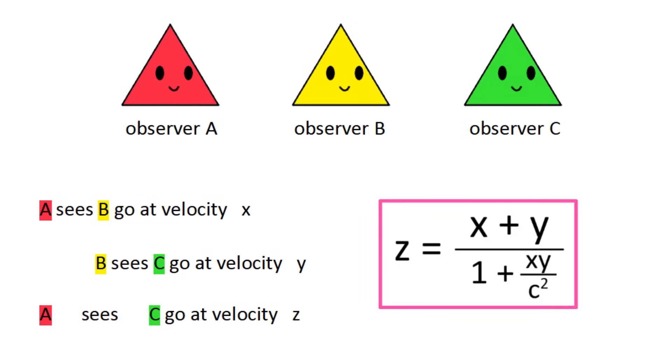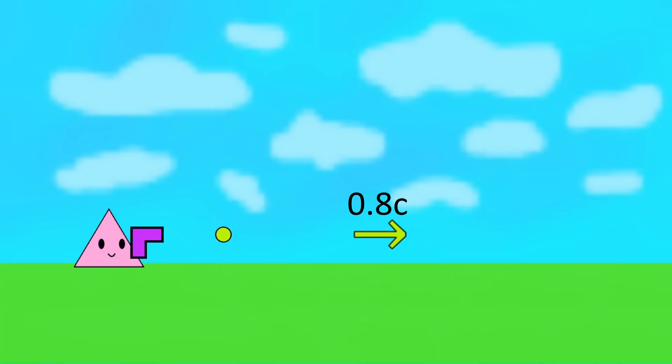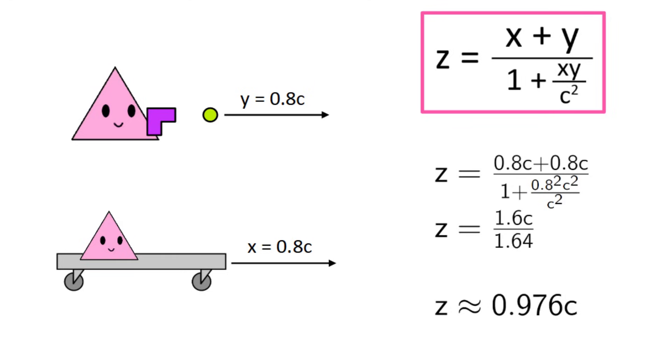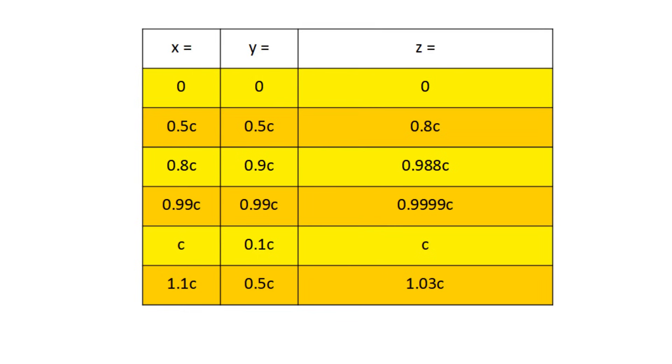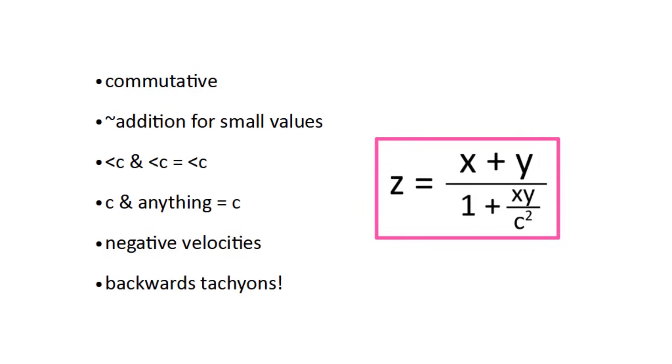As an example, if someone has a throwing velocity at 0.8c, and they use it on a ship that's moving at 0.8c, then the projectiles will not move at 1.6c. Instead, using the formula, we can see that the velocities combine to 0.976c. No matter how much you change the velocities, they will never combine to more than c unless one of them is already more than c. This is just one of many beautiful intricacies of the formula.